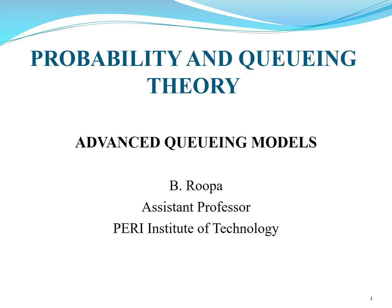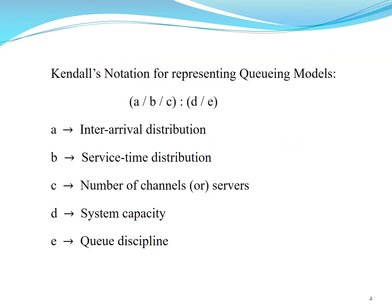The topic we are going to see now is advanced queuing models in probability and queuing theory. First, we should know about Kendall's notation for representing queuing models. It is given by A/B/C/D/E, where A is the inter-arrival distribution, B is the service time distribution, C is the number of channels or servers, D stands for the system capacity, and E stands for queue discipline.